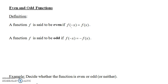A function f is said to be even if f of negative x is equal to f of x. So what that means is, if you have some formula for f of x and you replace all of the x's with negative x, you end up getting the same formula again. For example, f of negative 5 should be the same thing as f of 5, and f of negative 7 should be the same thing as f of positive 7. If that's the case for every x, then you have an even function.